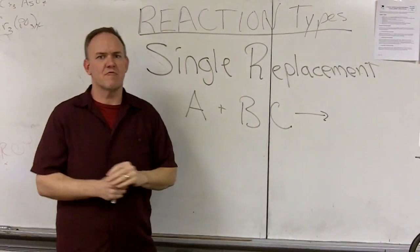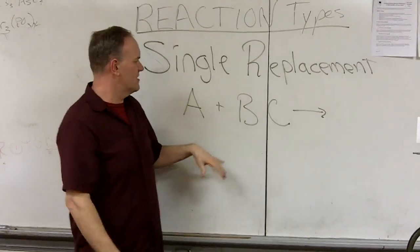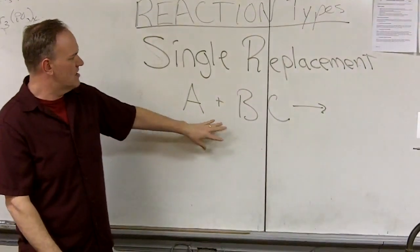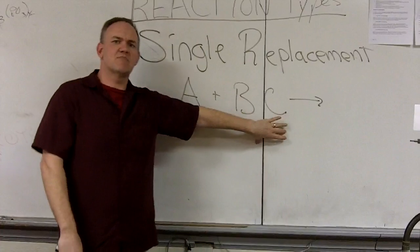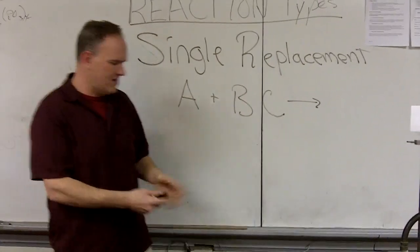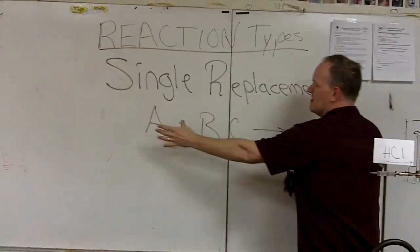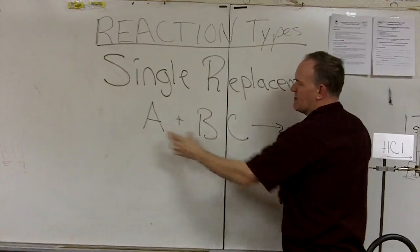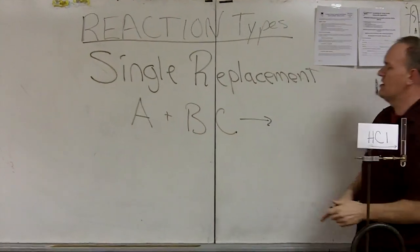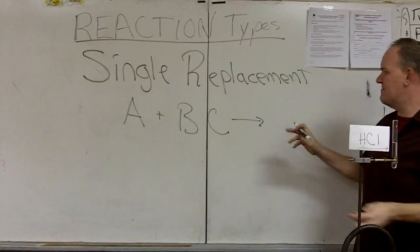And what's going to happen in this chemical reaction is going to be a change. What's going to happen in the reaction is B and C are going to split up and one of them is going to leave with A. So before the reaction you have element and compound, single and couple. And after the reaction you're going to have a change.